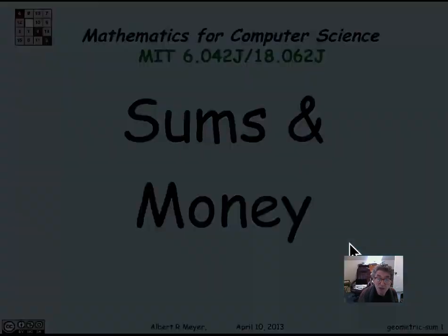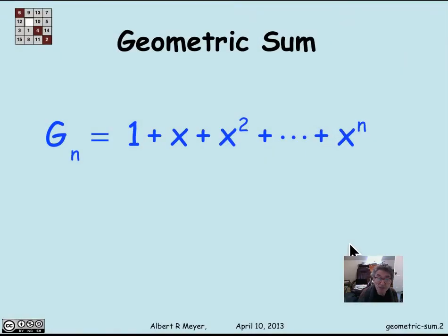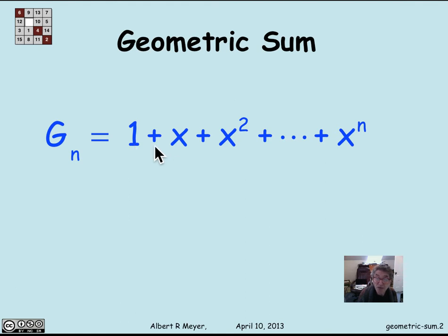Let's begin with a geometric sum — here's the standard form. A geometric sum is of the form 1 plus x plus x squared up through the nth power of x. For uniformity, notice that 1 is actually x to the 0. So we're taking the sum from k equals 0 to n of x to the k. What I'd like to do is find a nice closed form for this without those ellipses and a growing number of terms n — and there's a simple trick.